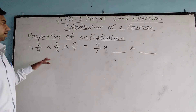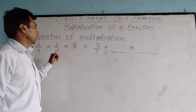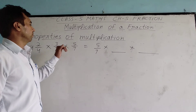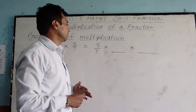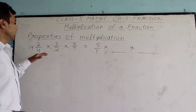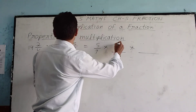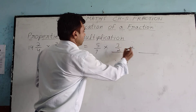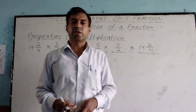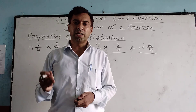Now a property-based question: changing the order. We have 2 by 4 multiplied by 3 by 2 into 5 by 7. Since 5 by 7 is written on one side, we need to fill in the blank. Using the property that changing the order of fractions does not change the result, we can write 3 by 2 multiplied by 2 by 4 in the blank space.